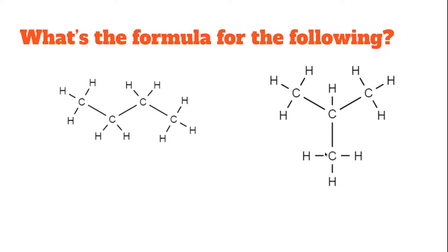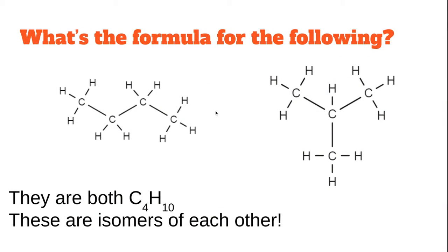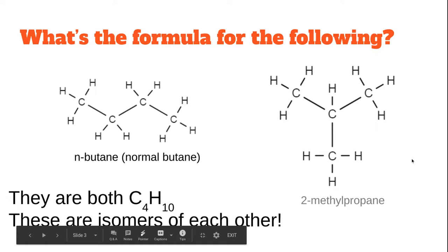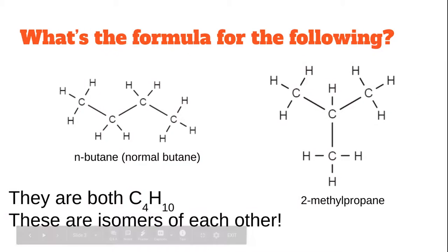So what is the name of the one on the left? Well, these are both isomers of each other. Obviously, the one on the left is normal butane, or just butane. And this one on the right is 2-methylpropane. These are isomers of each other.